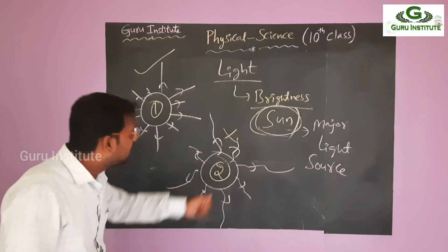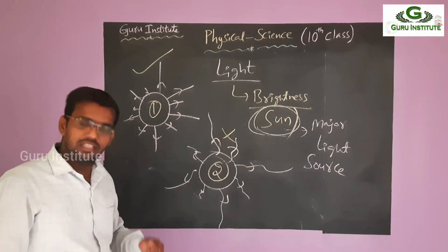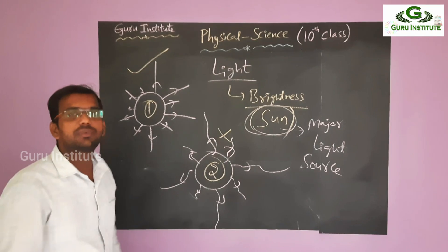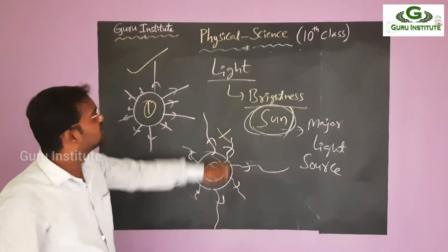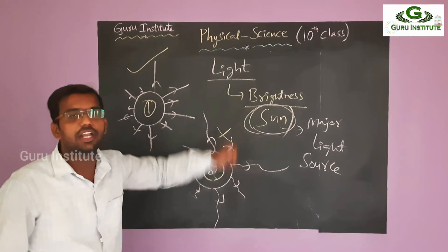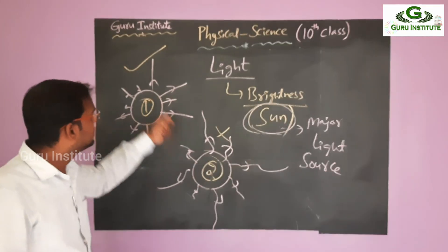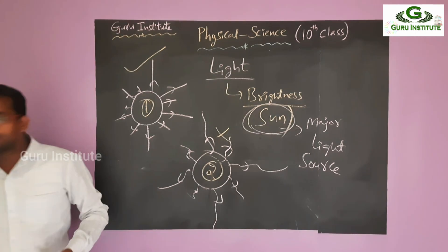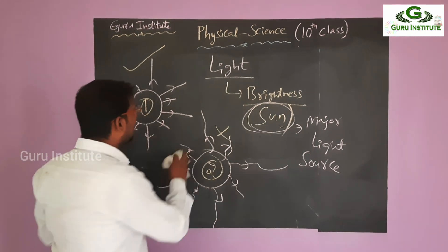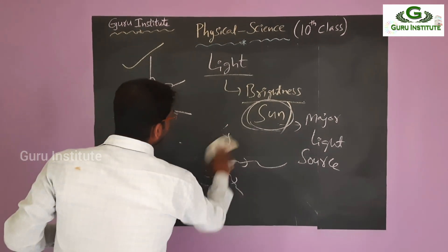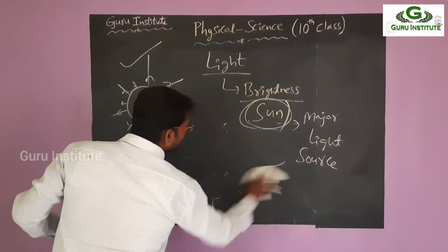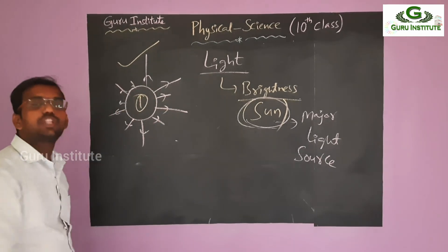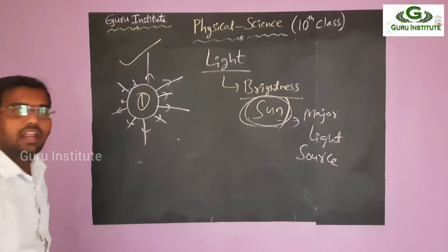Why are we not drawing like the second picture? Is there any reason? Yes, behind this there is a reason, and that is our basic light topic. What is the major picture of light? That means the sun. So from this we can conclude some basic principles of light.